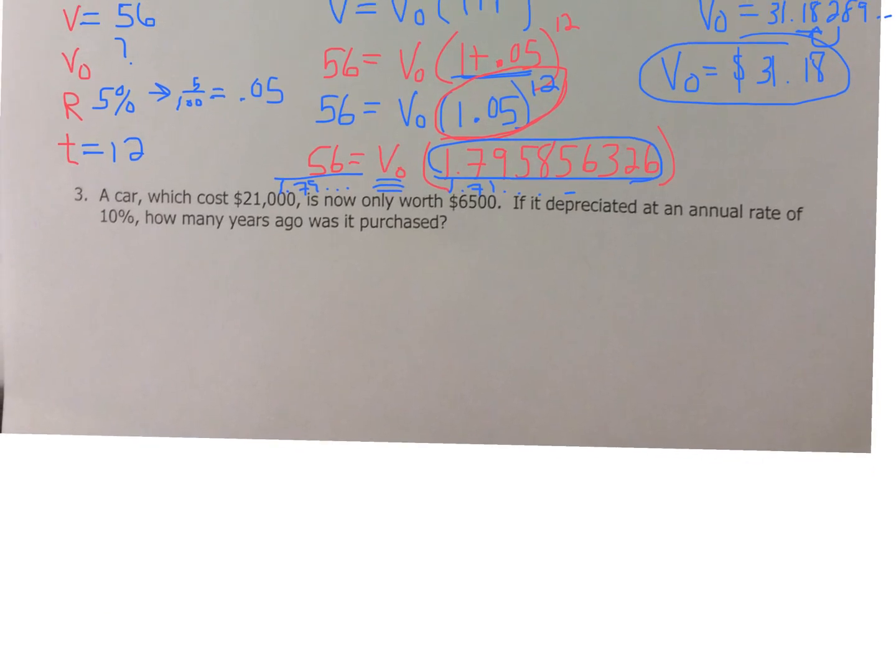Alright, let's look at number three. Now this one's going to be a little different, so you've got to be careful. A car, which cost you $21,000, is now only worth $6,500. If it depreciated at an annual rate of 10%, how many years ago was the car purchased? So, V-O-R-T. Alright, so here we go. A car which cost you $21,000, so it's the original cost of the vehicle. It's now only worth $6,500. If it depreciated, that means we're going to subtract. At an annual rate of 10%, so 10%, which is 10 divided by 100, or .10, how many years ago was the car purchased? So we're looking for time.